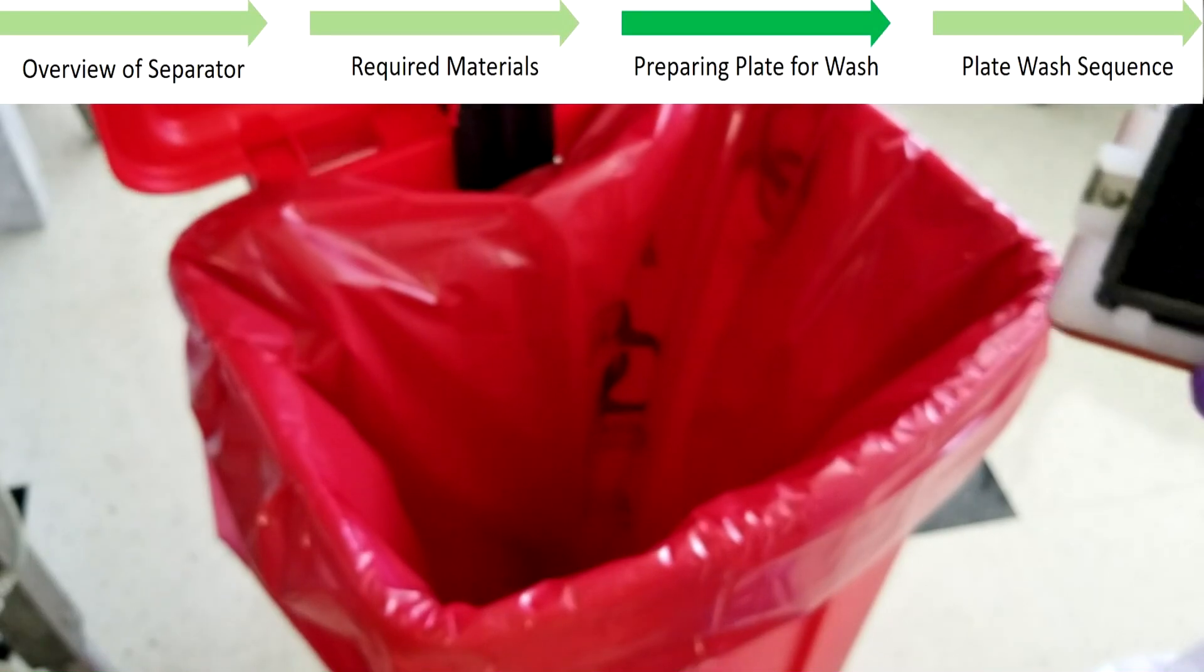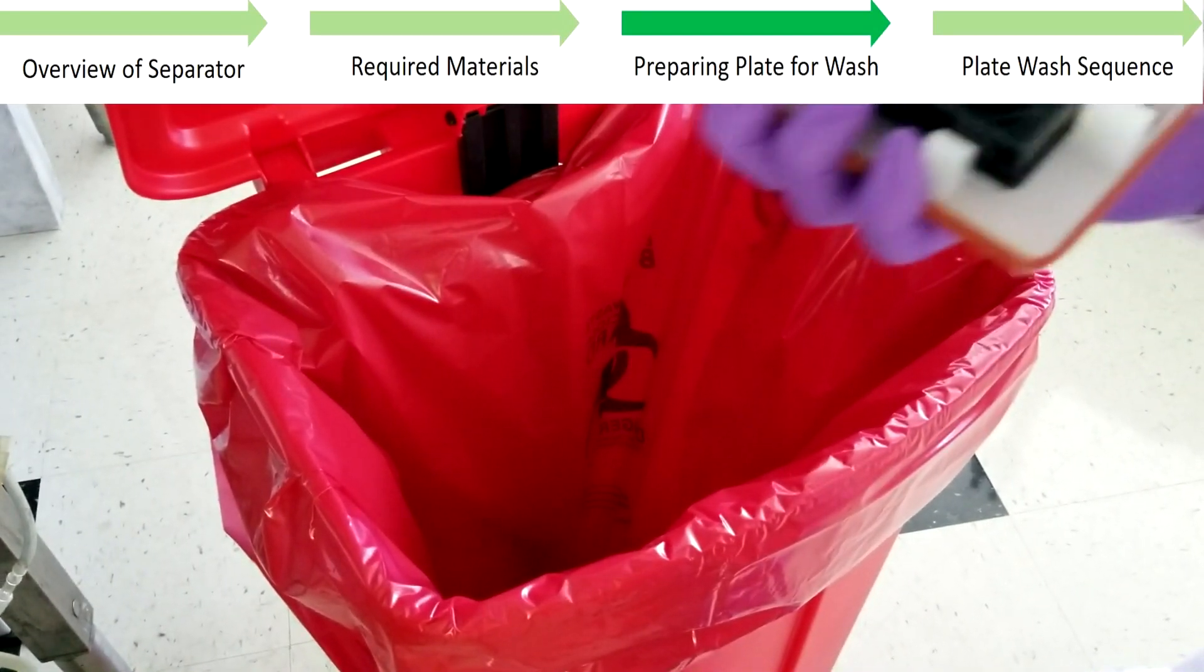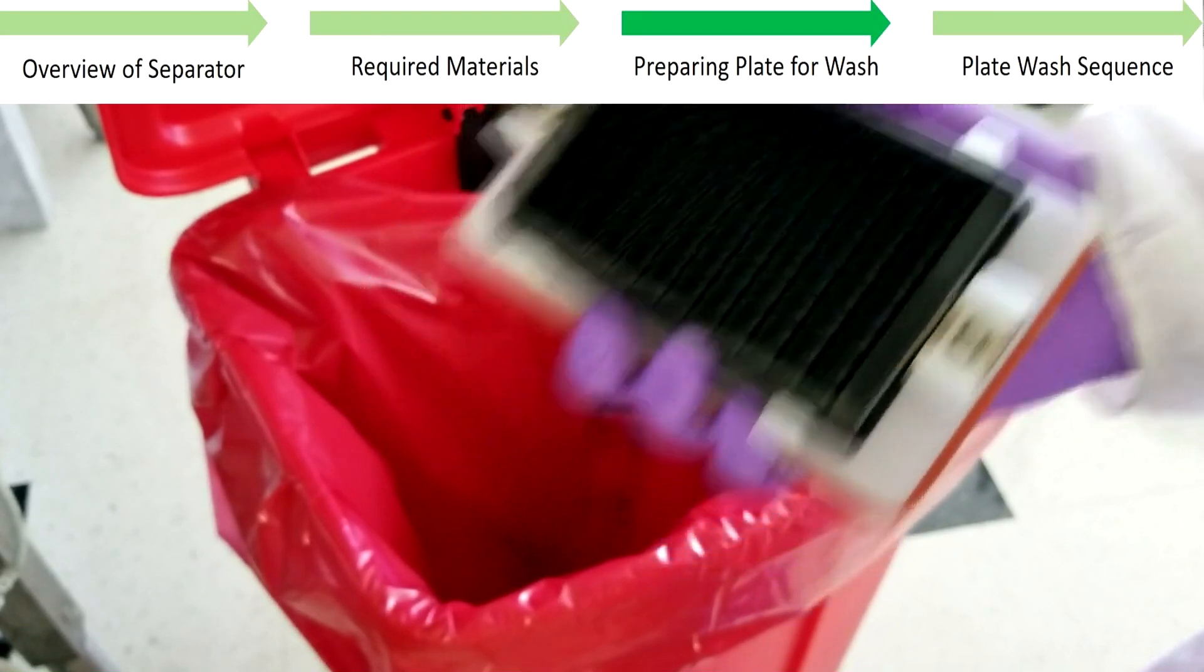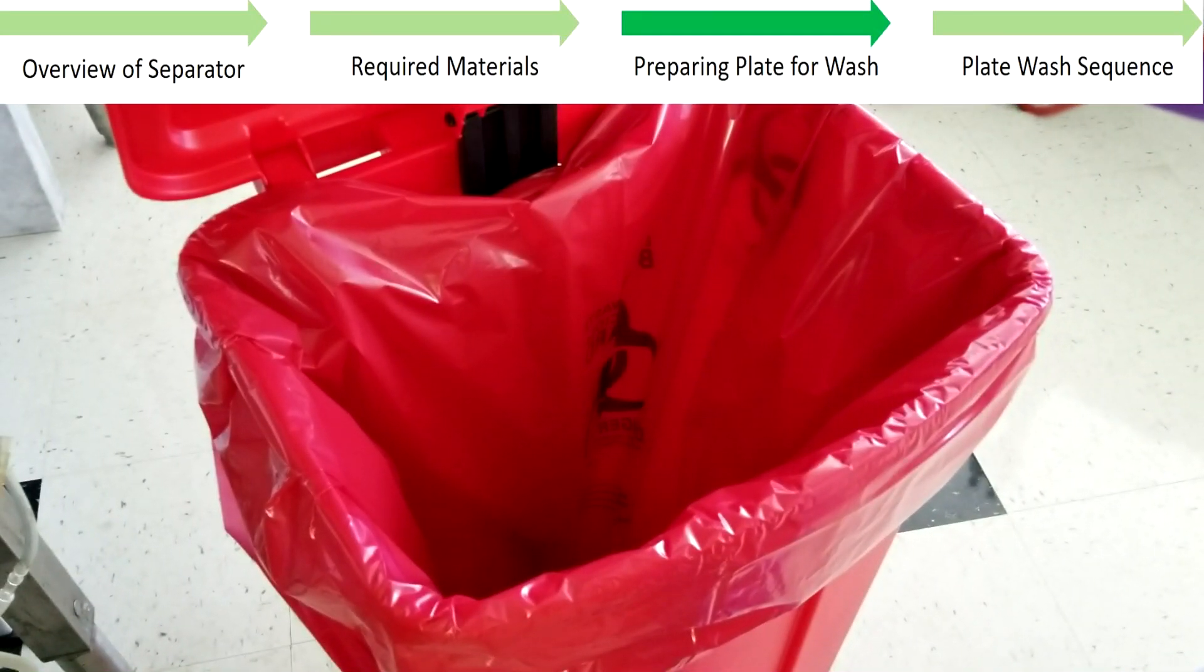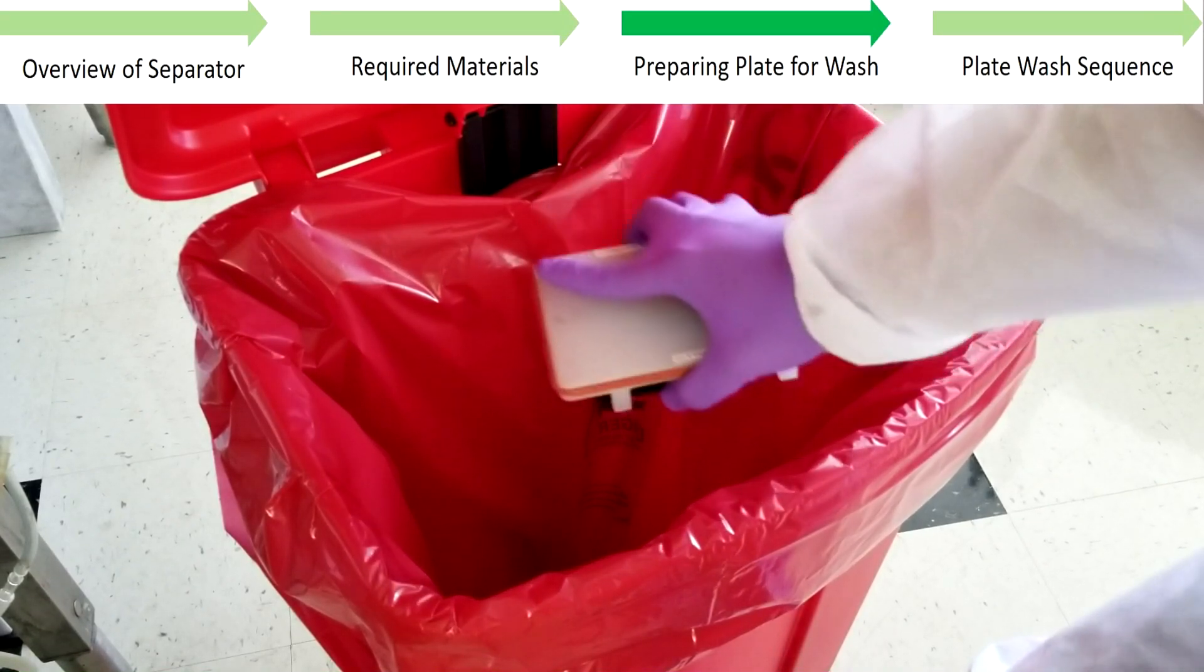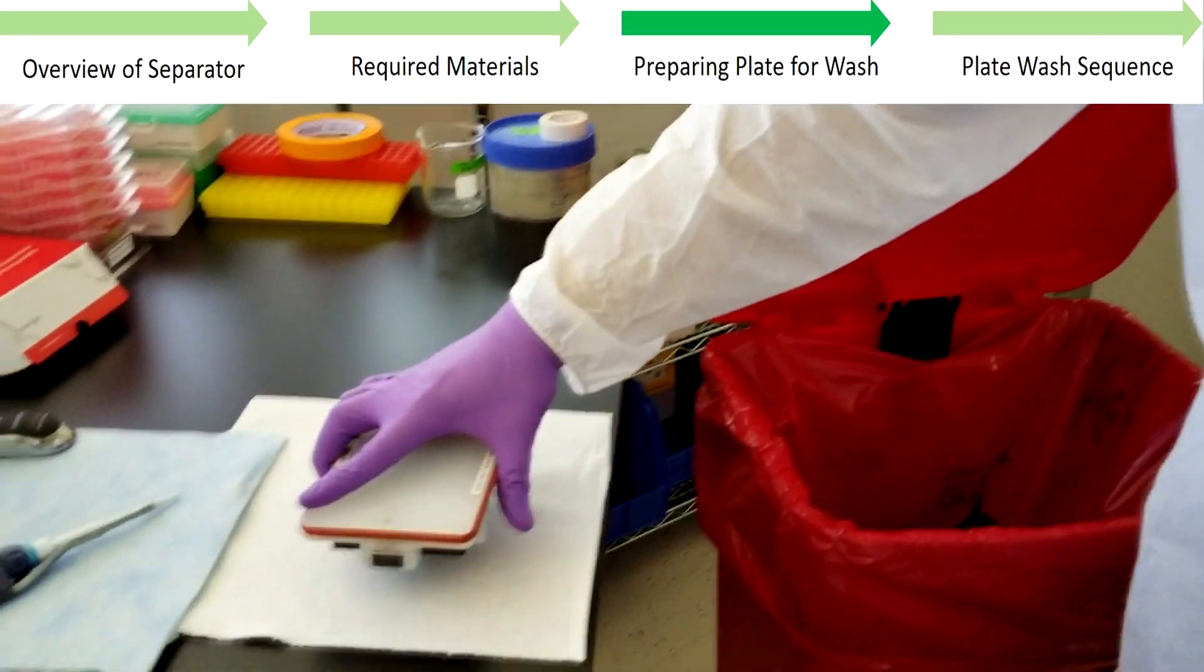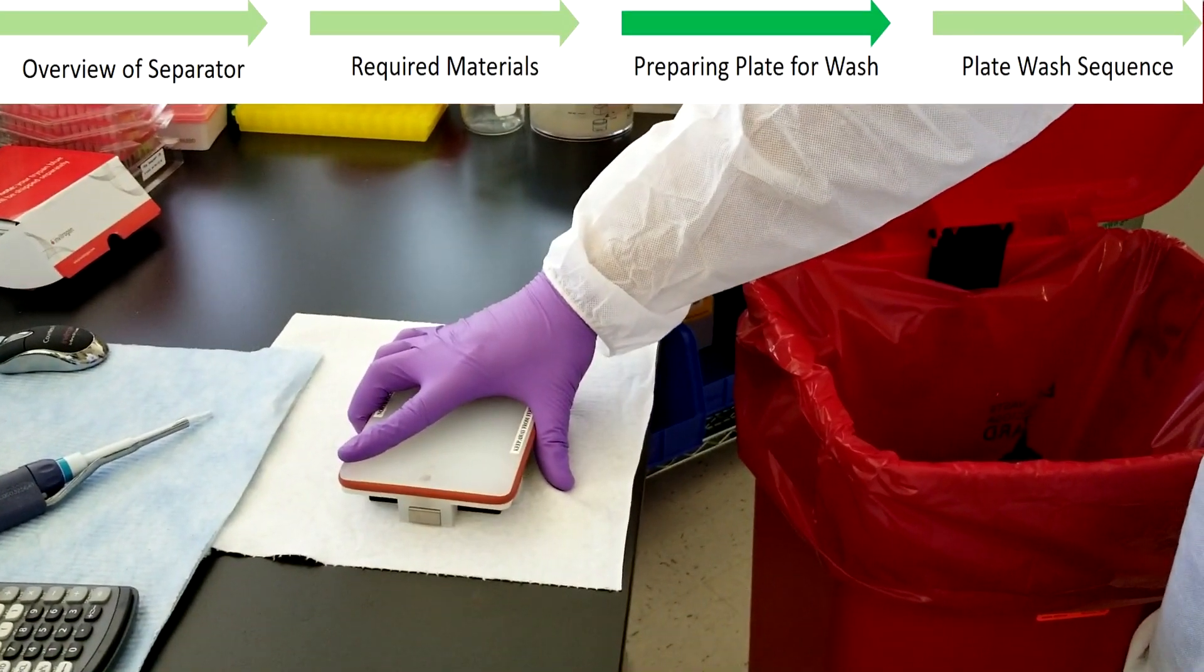Next, carefully remove the adhesive seal and pick up the separator by its base, with the assay plate still locked in. Invert it over an appropriate waste container and use strong downward force to eject liquid well contents while leaving the beads undisturbed. Briefly dab the assembly on a clean paper towel.